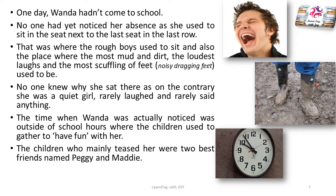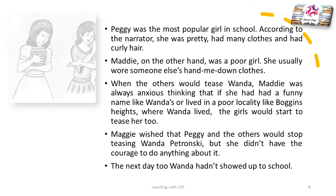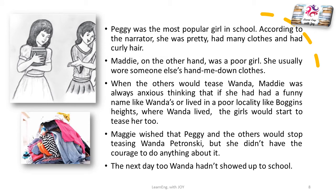The children who mainly teased her were two best friends named Peggy and Maddie. Peggy was the most popular girl in school — she was pretty, had many clothes, and had curly hair. Maddie, on the other hand, was a poor girl who usually wore someone else's hand-me-down clothes. In fact, she wore Peggy's hand-me-downs.